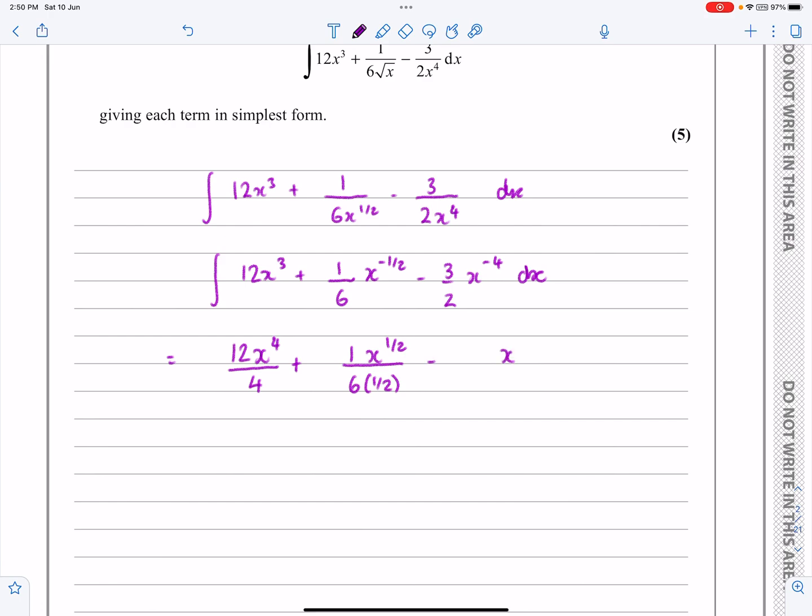And then be careful with the minus, adding 1 onto the power makes it minus 3, and dividing by minus 3 makes it a minus 3 there, plus our constant.